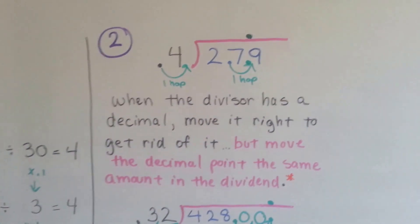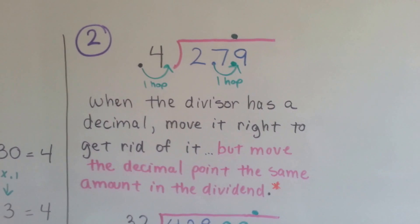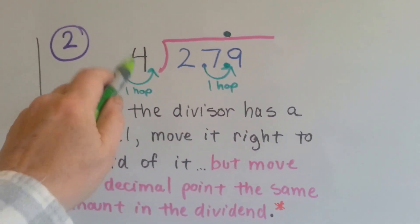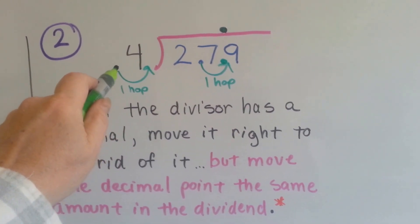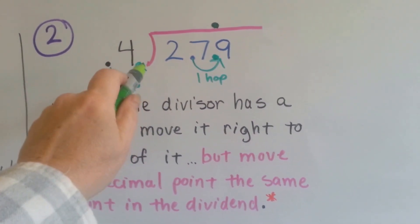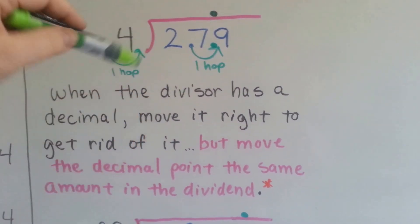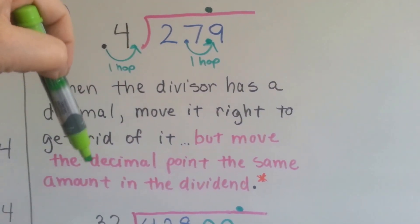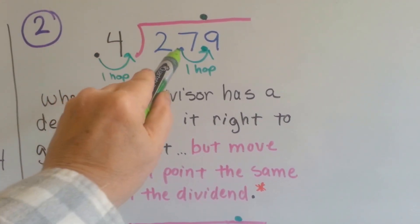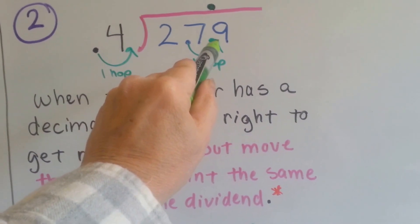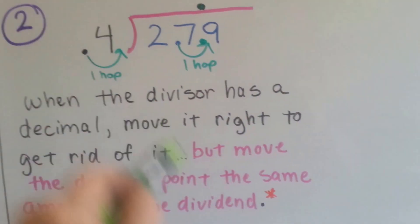Here's the other one. When the divisor has a decimal, move it right to get rid of it. So if this divisor has a decimal point in front of it, you hop it over behind it to get rid of it so it's a regular number, but you move the decimal point the same amount in the dividend. If the decimal point is here between the 2 and 7, you now have to hop it back between the 7 and 9 because you did it to the 4, okay?